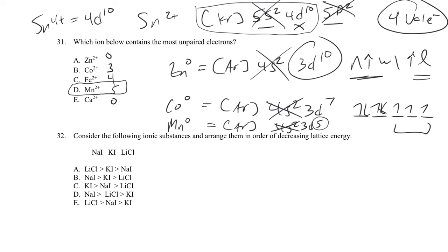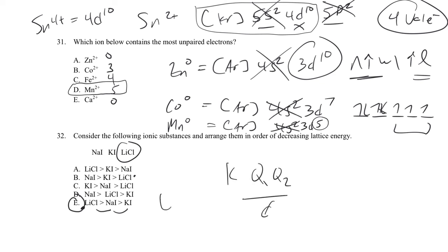Lattice energies: smaller ions have greater attractive force and take more energy to separate. Comparing sodium iodide, potassium iodide, and lithium chloride — lithium chloride has the smallest ions, so the greatest lattice energy. Sodium iodide has larger ions than LiCl but smaller than KI. Potassium iodide has the largest ions, giving it the lowest lattice energy. The relationship is kappa times Q1 times Q2 divided by distance — closer ions mean greater electrostatic attraction and higher lattice energy.